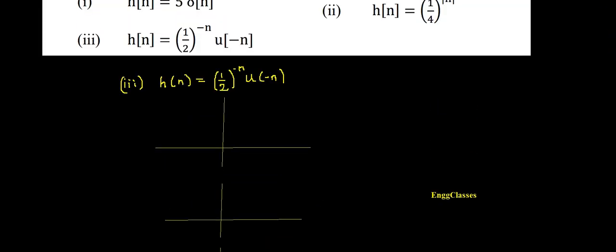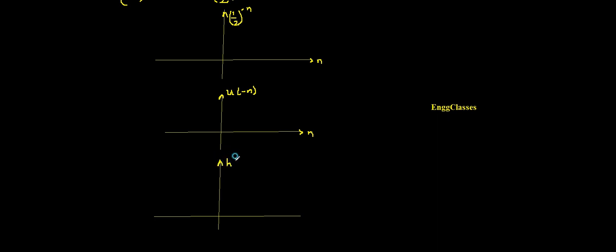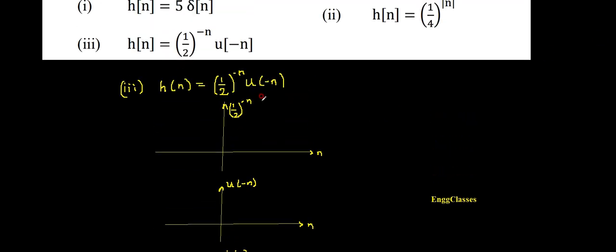Let me call the first signal (1/2)^(-n), drawn with respect to the time axis n. The second signal is U of minus n, also drawn with respect to n. Multiplication of those leads to the third signal, the impulse response H of n. For the first signal, consider n = 0, 1, 2, 3 and so on. n also takes negative values: minus 1, minus 2, minus 3 and so on.